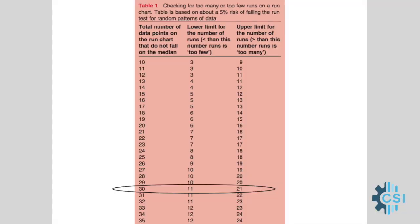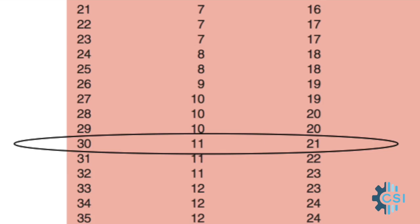So let's look at the table of values for runs. In the row on the table for 30 data points, we see that if there is only common cause variation, we should have a value of 11 or greater on the low end and 21 or lower on the upper end. Our value is 11, so this run chart section meets the criteria for only showing common cause variation on the basis of the number of runs.